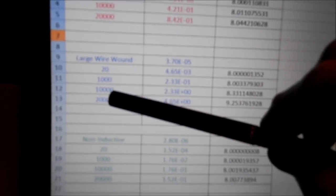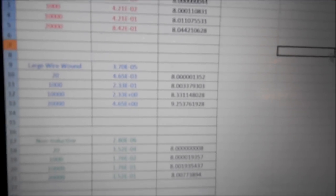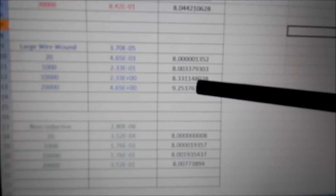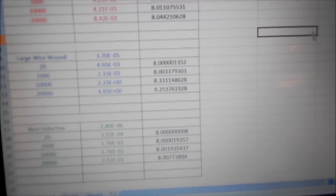The big wire-wound guys at 20 Hz, 1 kHz, 10 kHz, and 20 kHz: we get 8 ohms at 20 Hz, 8 ohms at 1 kHz, 8.3 ohms at 10 kHz, and 9.25 ohms at 20 kHz. That's the worst-case condition with four big wire-wound resistors. The non-inductive ones are 8, 8, 8, and 8.